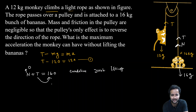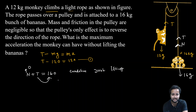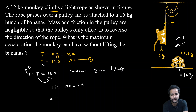Jab just upar uthe toh Normal force = 0. Matlab jo Tension force hai wo 160 Newton hai. Ab is value ko Equation 1 mein likhenge: 160 minus 120 equals to 12a, toh 40 = 12a.